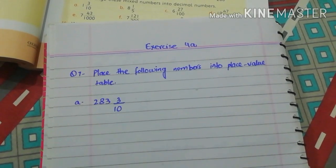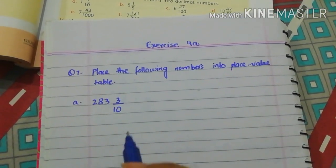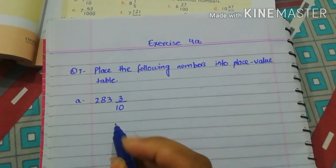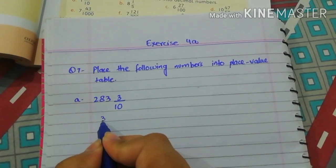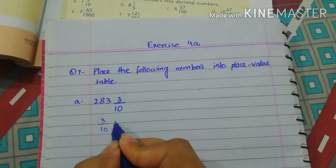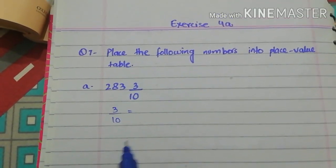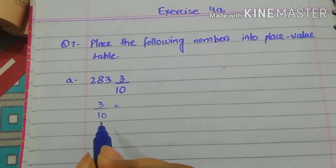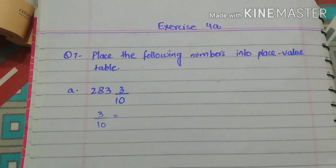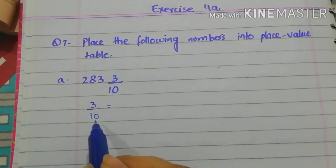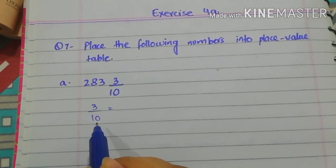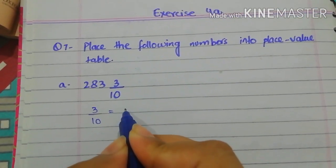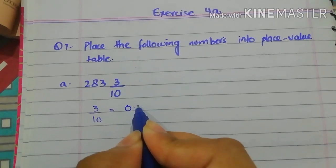283 whole 3 by 10. First, we will convert this fraction 3 by 10 into decimal. So, 3 by 10 is equal to... Dear students, we already know that if the denominator is 10, that mean after decimal we place one value. Because in 10 we have one zero. So, after decimal we place one value. So, the 3 by 10th is equal to 0.3.